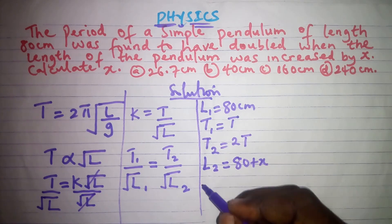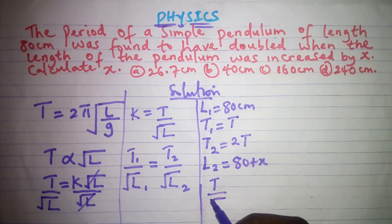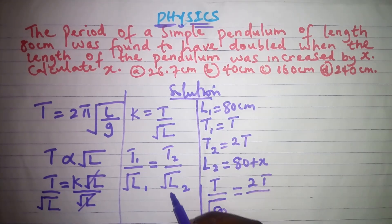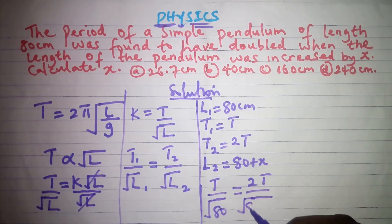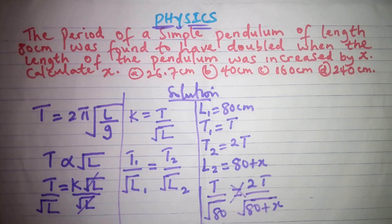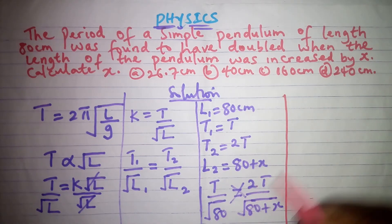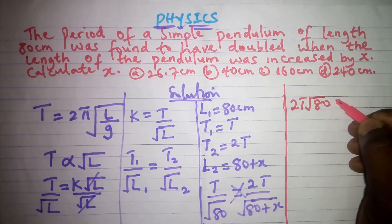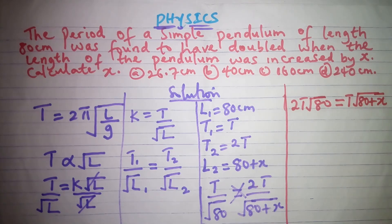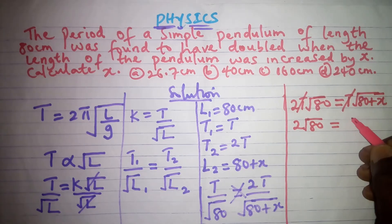Fixing into the equation: T1/√L1 = T2/√L2 becomes T/√80 = 2T/√(80+x). Cross-multiplying gives T times √(80+x) = 2T times √80. The T cancels, leaving 2√80 = √(80+x).